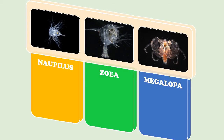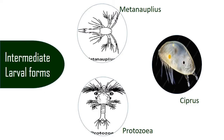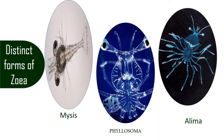Three main larval forms are Nauplius, Zoea, and Megalopa. Intermediate stages receive different names like Metanauplius, Cypris, and Protozoea. Modified and distinct forms of Zoea are given special designations like Mysis of Lobsters, Phyllosoma of the Spiny Lobster, and Alima of Squilla.